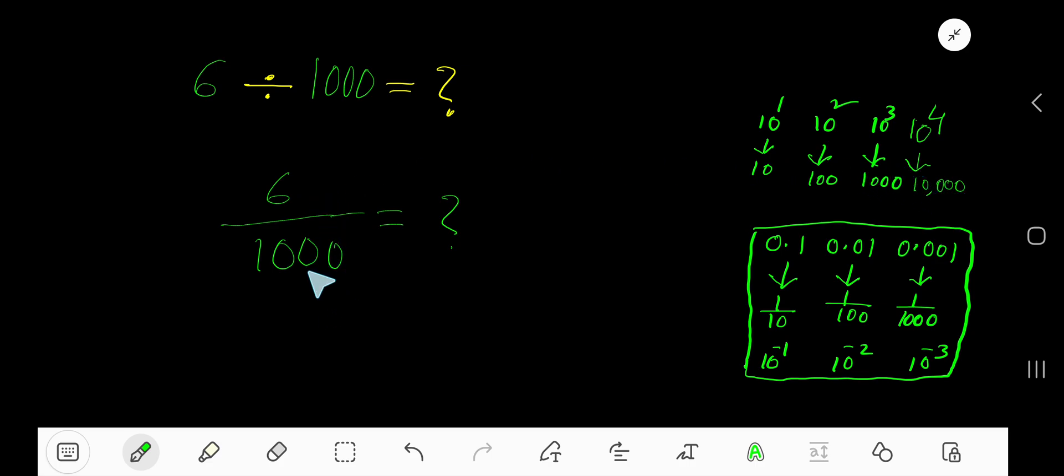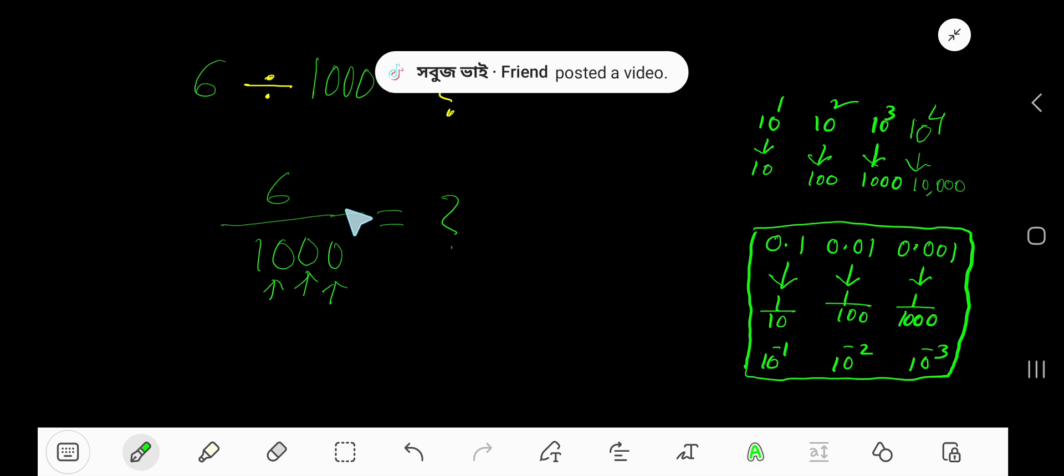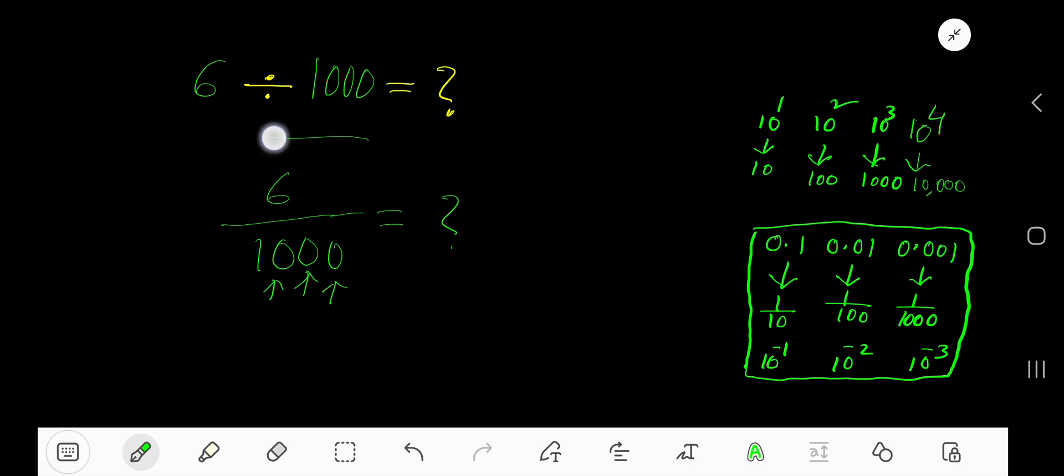To divide a whole number by power of 10, just count the number of zeros in the power of 10 and move the decimal point from right to left equal to that number of zeros. Here number of zeros is 3. So we need to move decimal point from right to left.